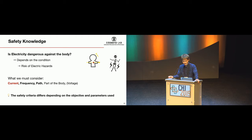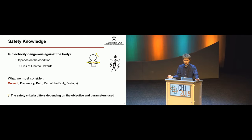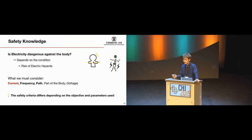There are various parameters we must consider for safety. For instance, the current is the most important thing, then frequency, the path the current takes through the body, which part of the body is used, and sometimes voltage — though the priority of discussing voltage is actually quite low here. The safety criteria differ depending on the objectives and parameters used.